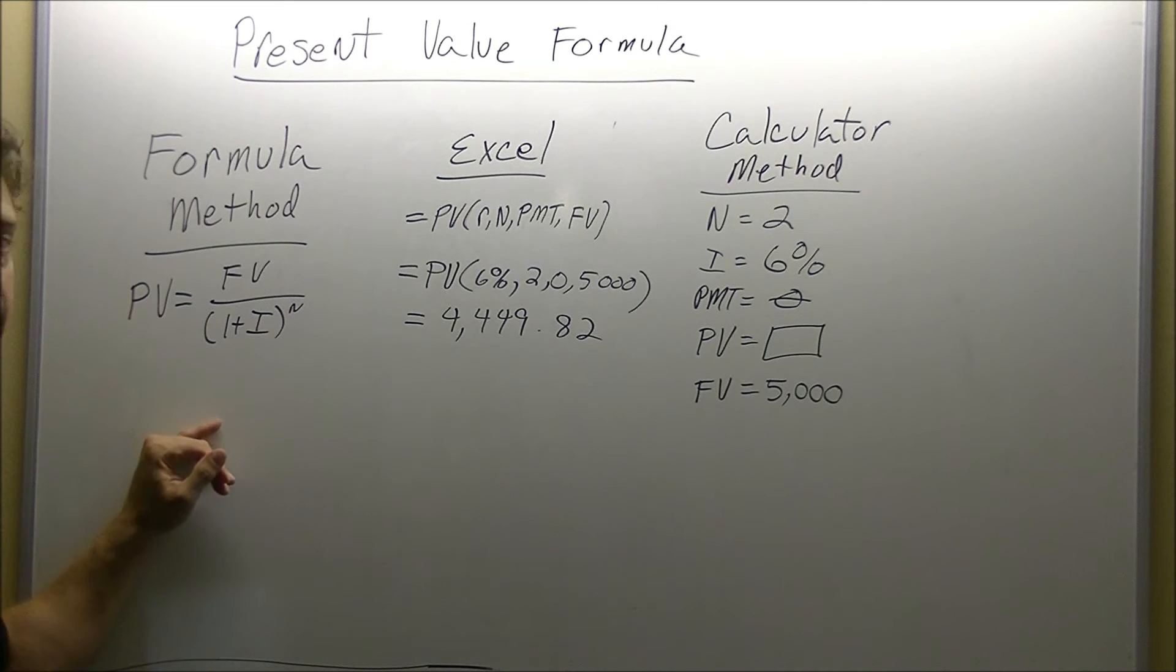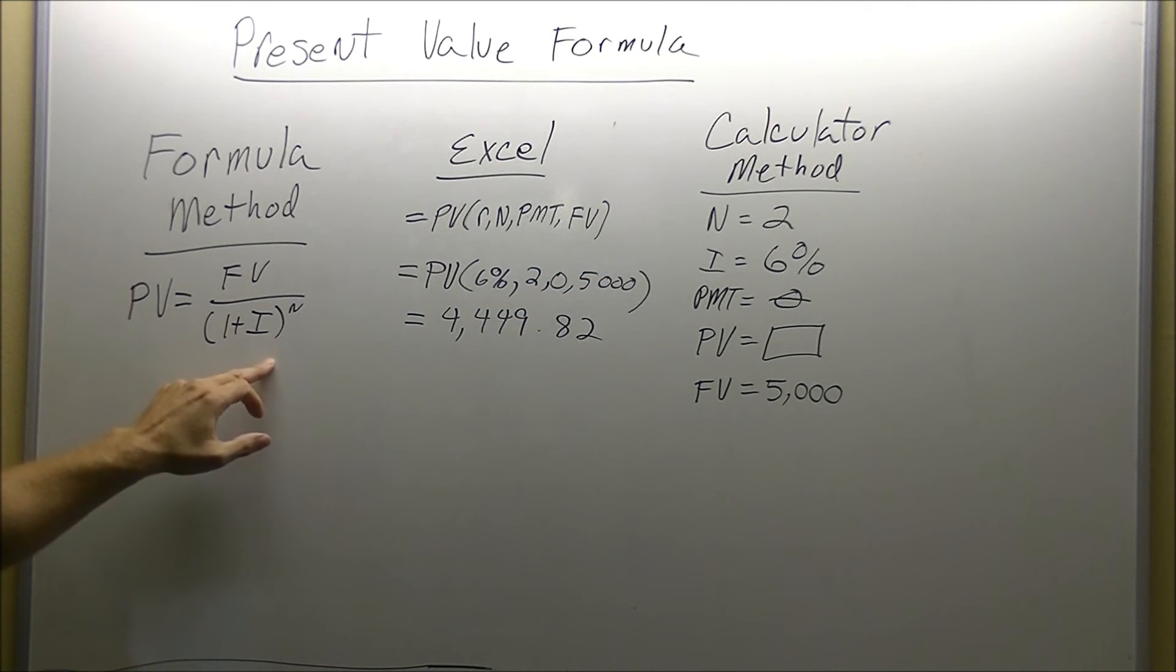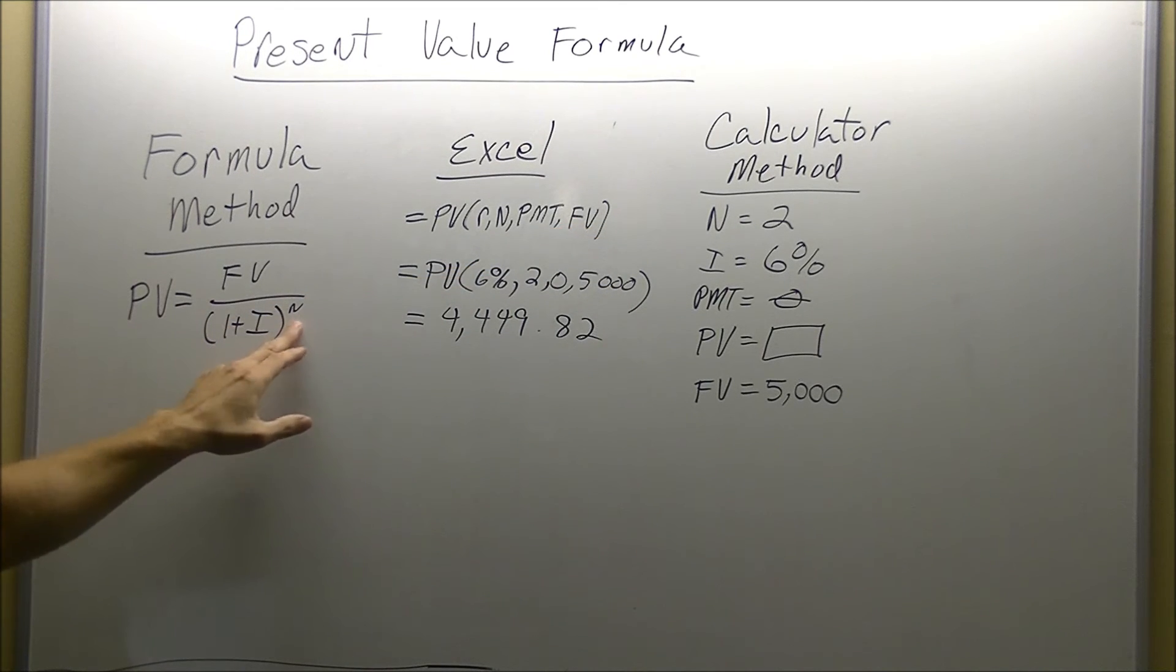The final method, if your instructor requires you to do so, is going to be with the formula. For the formula, it's going to be the present value, equal sign, your future value, division sign, open up a parenthesis, 1 plus your interest rate, we're back to the I, close your parenthesis, and your N, the number, is going to go upstairs as your exponent.